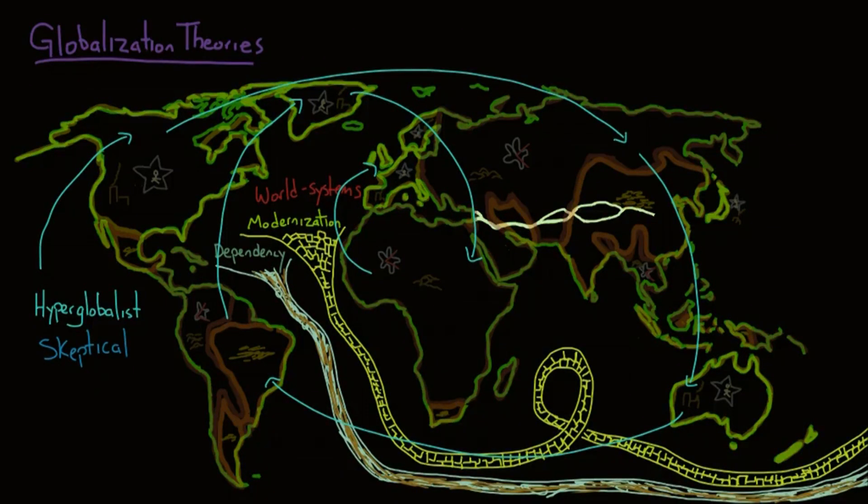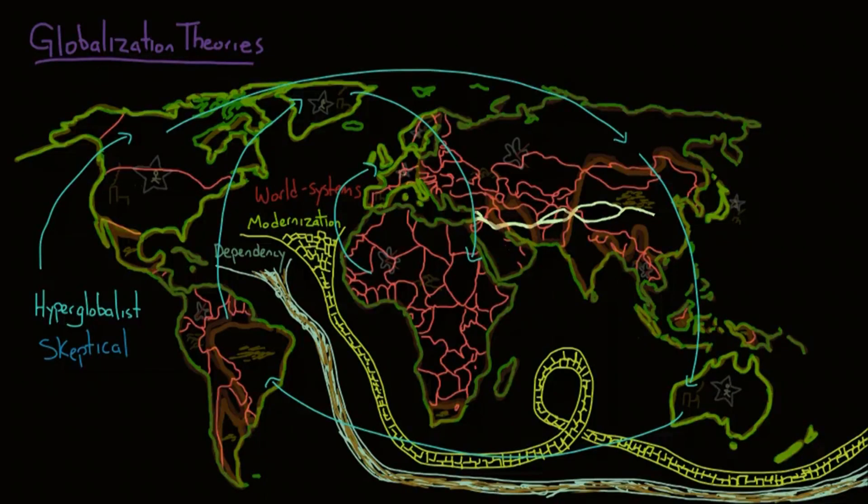The skeptical perspective is critical of globalization and considers today's international processes as becoming regionalized rather than globalized. Countries' borders are not becoming less important. The third world countries aren't being integrated into the global economy with the same benefits as first world countries. Skeptics don't believe that the current economy is leading towards global capitalism. Transnational corporations are still tied to their home country, and national borders are as important as ever.